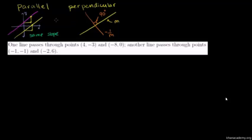Given this information, let's look at a bunch of lines and figure out if they're parallel, perpendicular, or neither. To do that, we just have to keep looking at the slopes. One line passes through the points (4, -3) and (-8, 0). Another line passes through the points (-1, -1) and (-2, 6). Let's figure out the slopes of each of these lines.